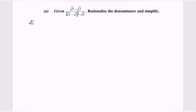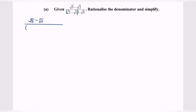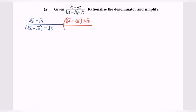We have square root of 5 minus square root of 2, over bracket square root of 2 minus square root of 3, minus square root of 5. So the conjugate would be square root of 2 minus square root of 3, plus square root of 5. We multiply by bracket square root of 2 minus square root of 3 plus square root of 5, over bracket square root of 2 minus square root of 3 plus square root of 5.